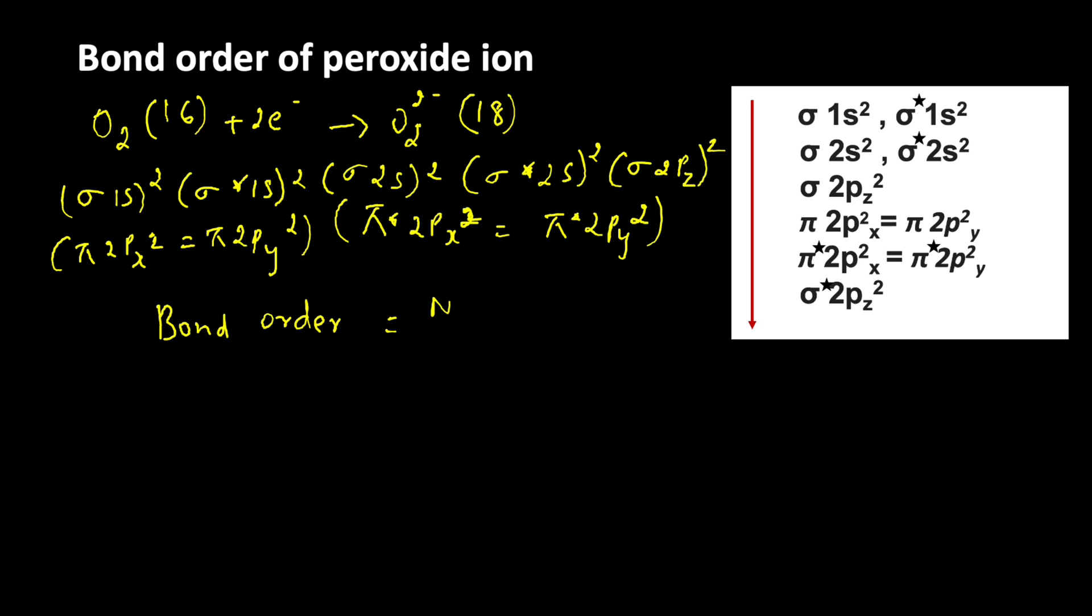Bond order is equal to Nb minus Na divided by 2. Nb is the number of electrons in bonding molecular orbitals, Na is the number of electrons present in antibonding molecular orbitals. The electrons which are present in sigma and pi molecular orbitals are called bonding molecular electrons.